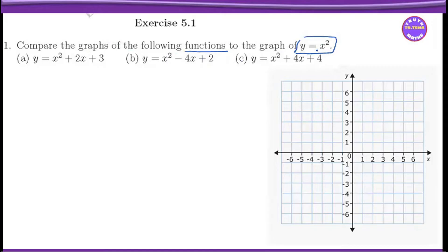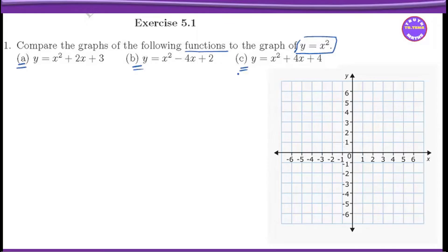In this case, the graph of y equals to x squared. If you look at y equals to x squared, the graph of y equals to x squared. Then we can see the vertex form of the vertex form. The vertex form of the vertex form is the same.